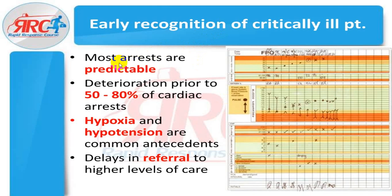Cardiac arrest can be predictable — any deterioration. Prior to cardiac arrest, almost 50 to 80% of the group shows that the person is deteriorating and might develop cardiac arrest. Hypoxia and hypotension are the common findings. Always look for hypoxia and hypotension. Delay in referral can lead to high morbidity and mortality. To increase the chance of survival, you have to detect them as early as possible. Early recognition is almost the most important thing.